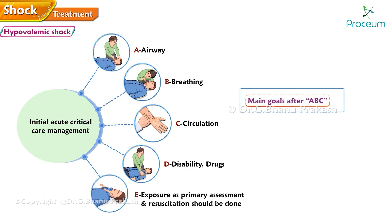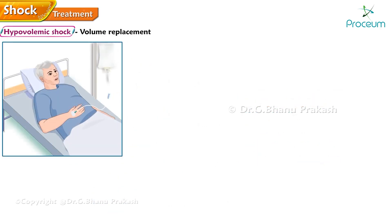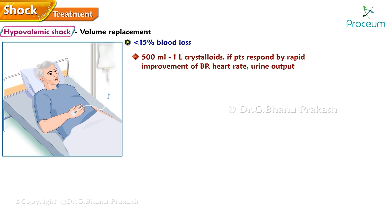Main goals after ABC: stop the bleeding, restore the volume, correct any electrolyte or acid-base disturbances. For volume replacement, if there is less than 15% blood loss, 500 milliliters to one liter of crystalloids are given. If the patient responds with rapid improvement of blood pressure, heart rate, and urine output, they are categorized as a rapid responder.